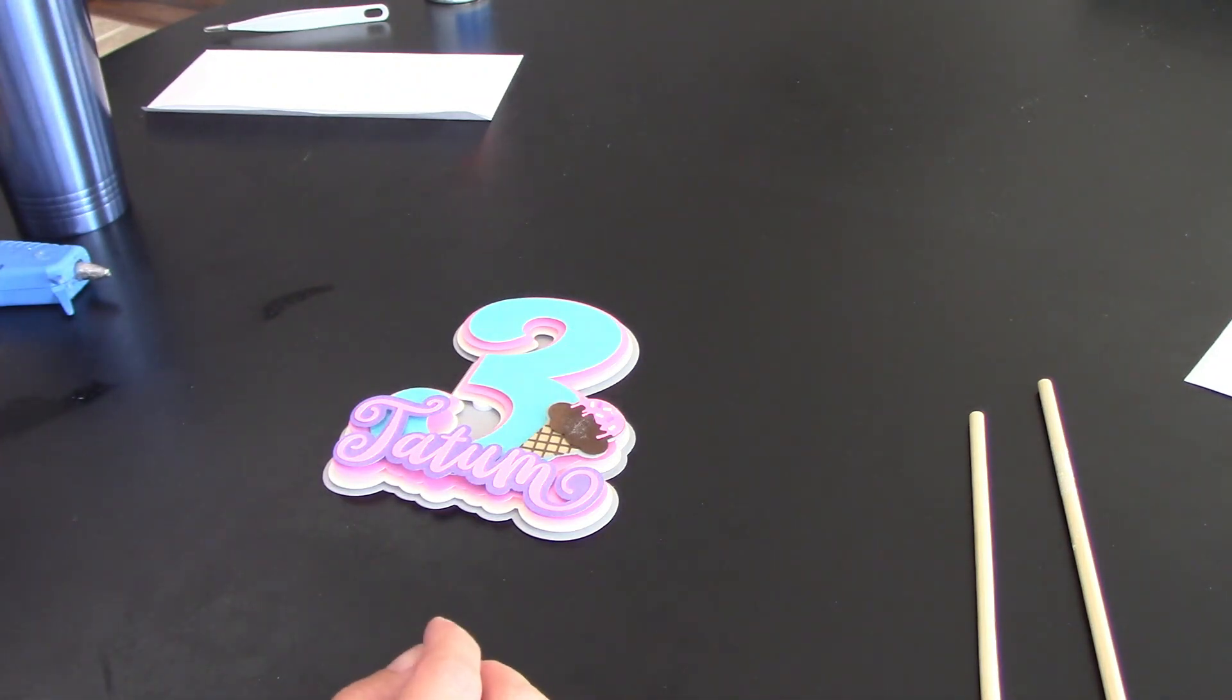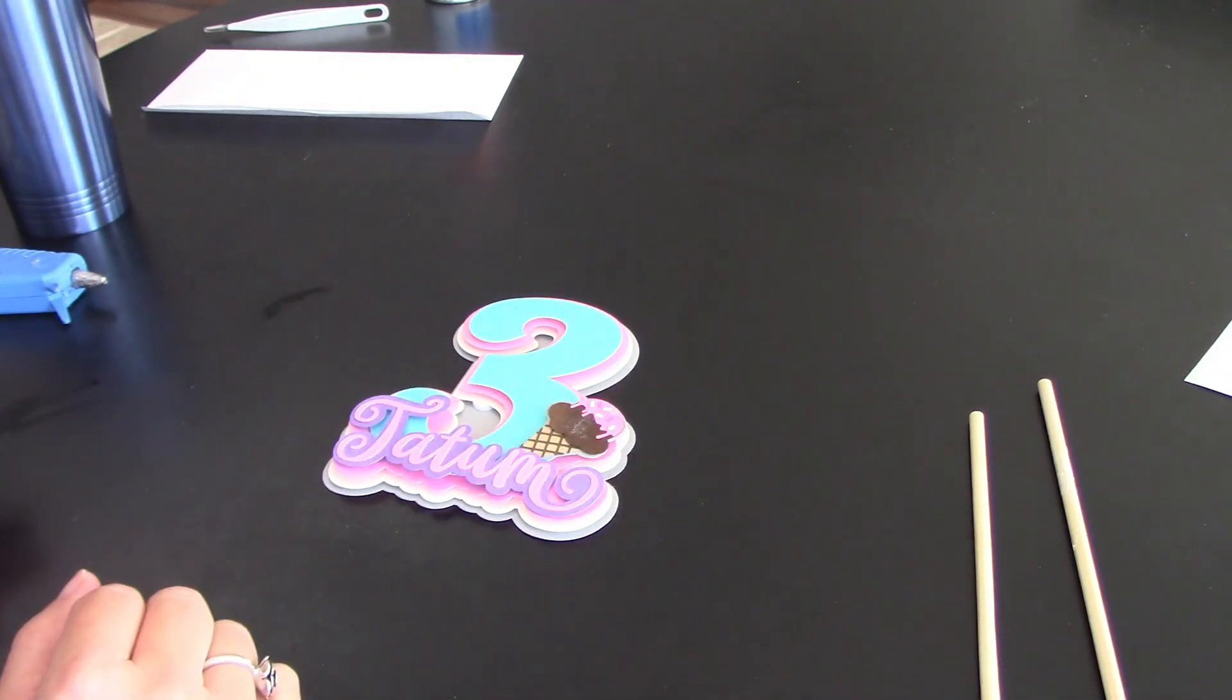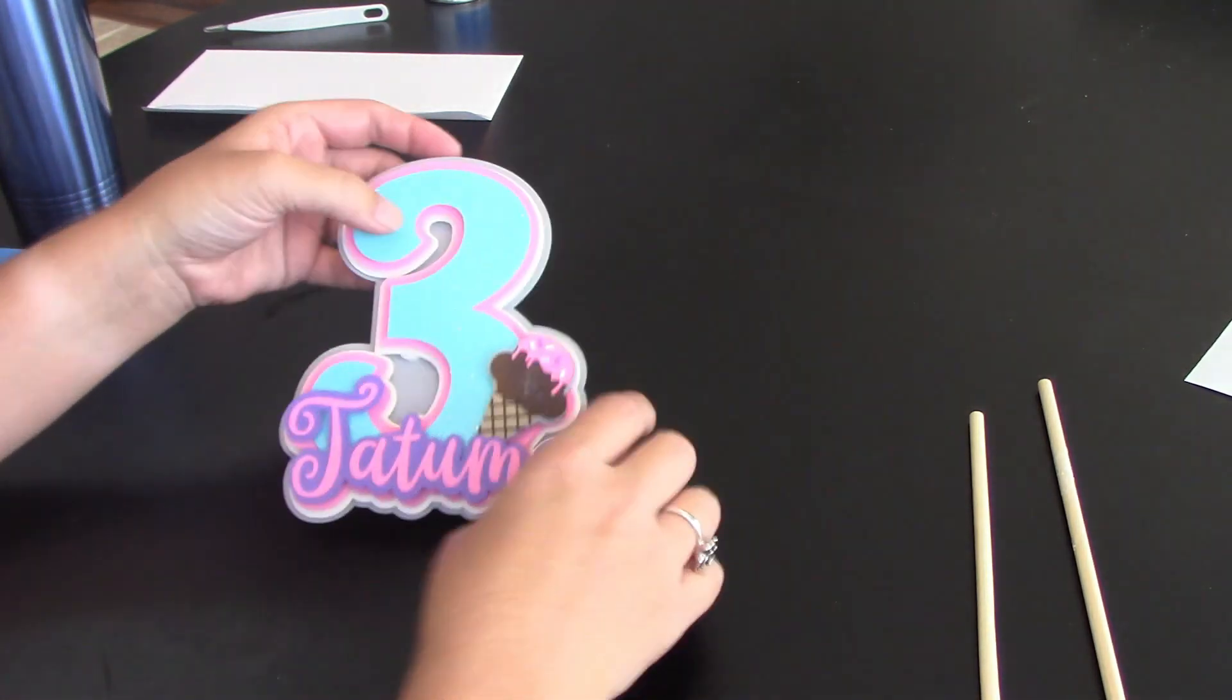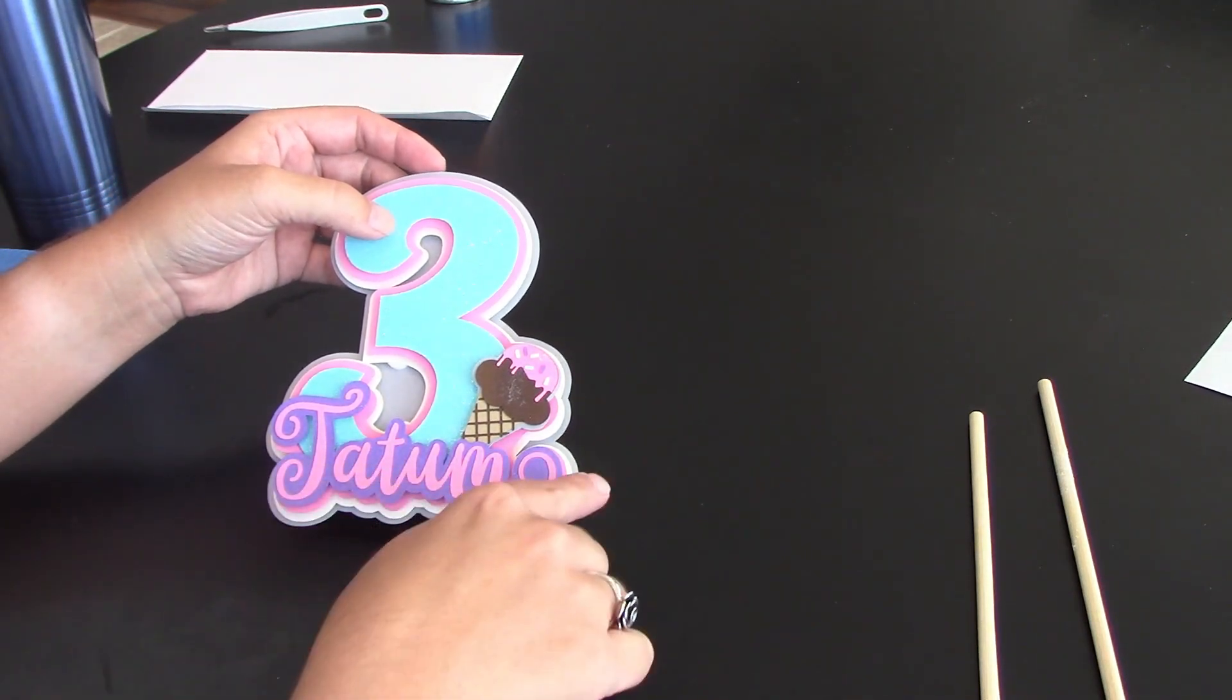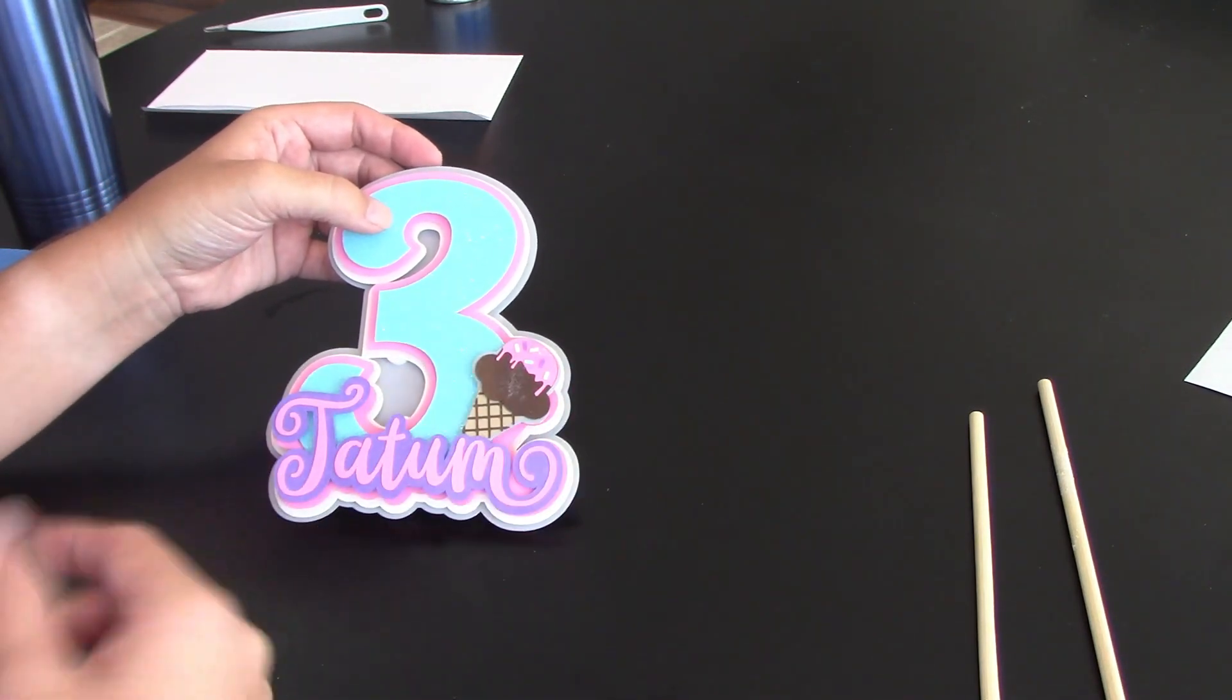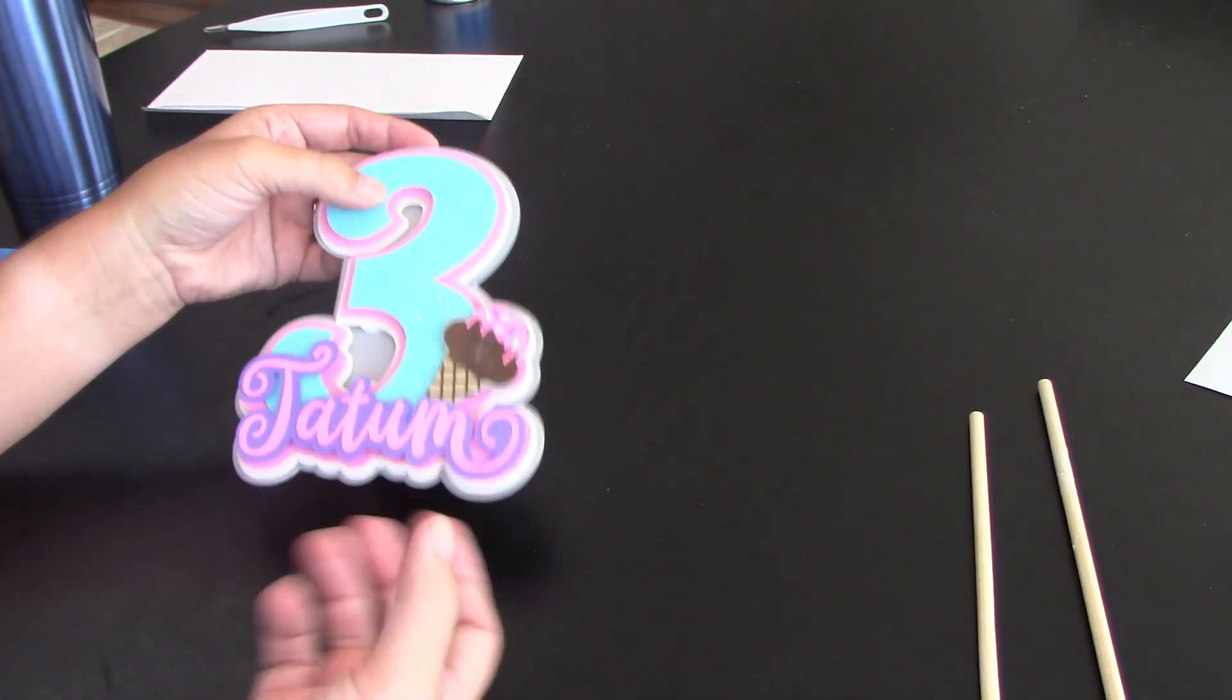While I was waiting on my hot glue gun to heat up, I actually glued down the sprinkles to the top of the ice cream cone. So you can see that it's still a little gluey and wet, but it'll dry just like the Tatum, you don't see the glue on that now, but we obviously put it on there.